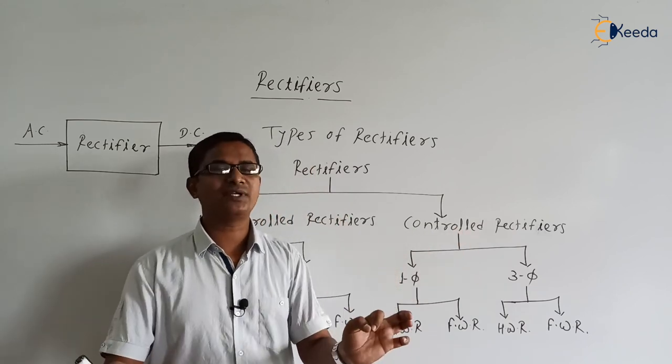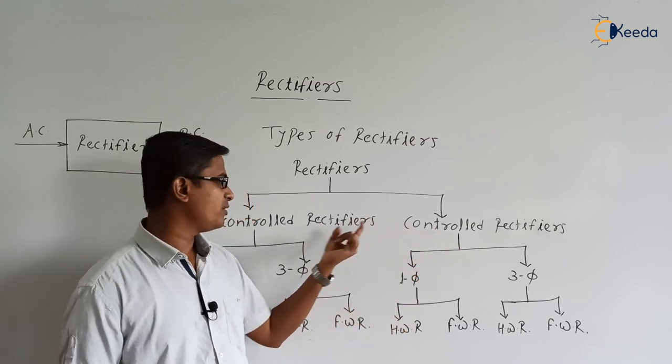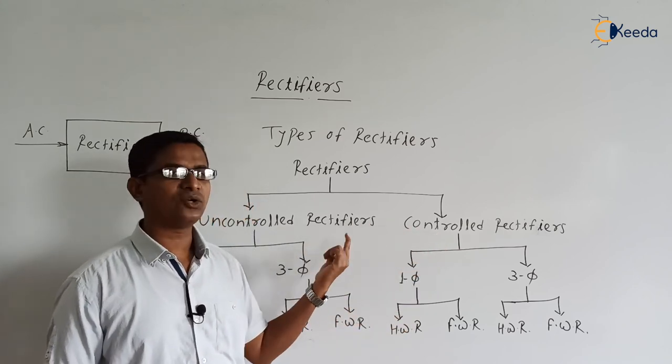There is a very slight difference between controlled and uncontrolled rectifiers. Here, if alpha is equal to zero, it will behave as an uncontrolled rectifier. Thank you.